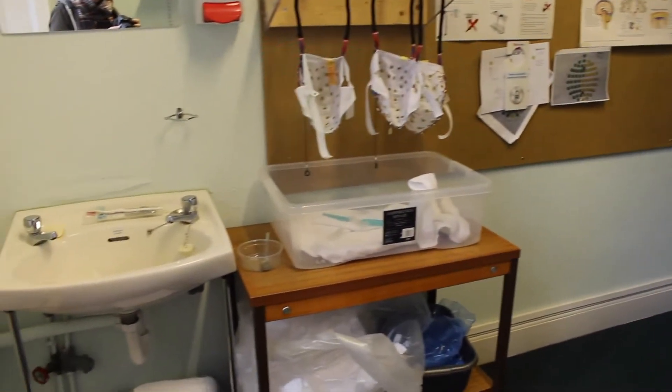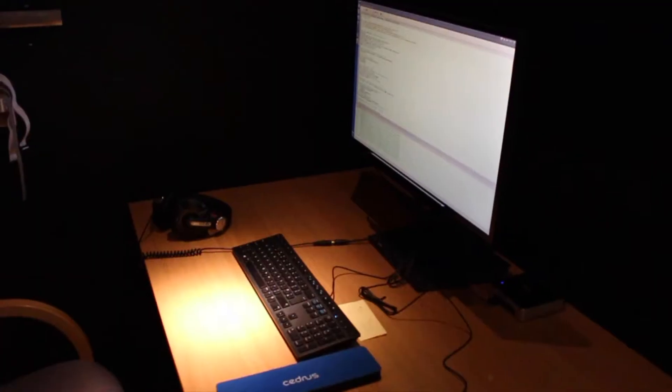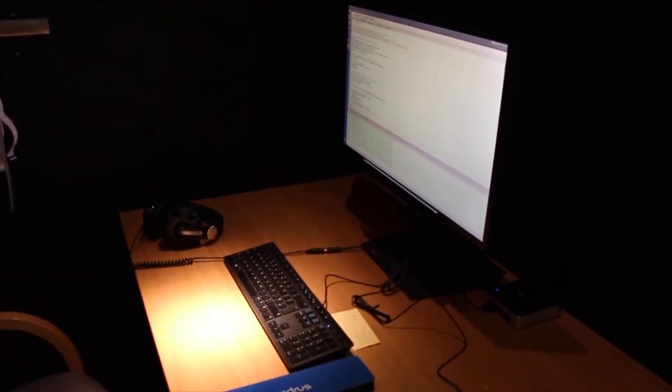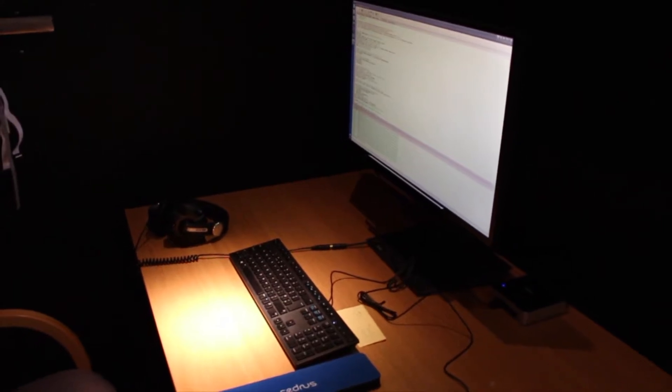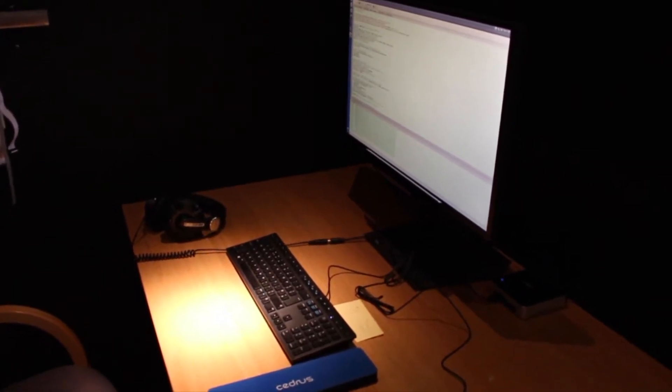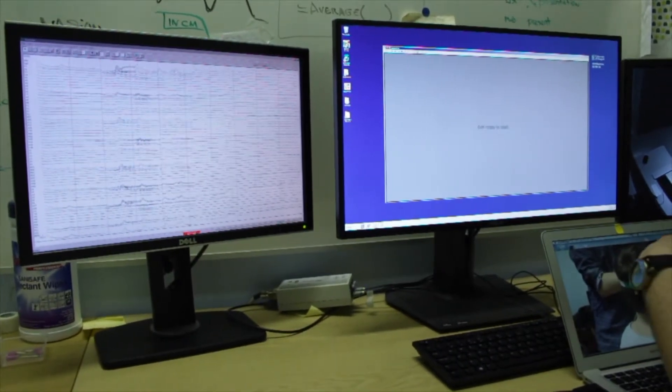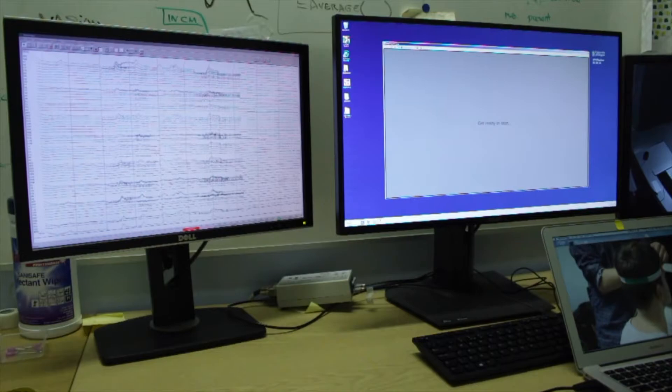There are currently two computers in use. The Stim PC, displayed on the monitor inside the booth, is used for stimulus presentation. As your participant does a task, triggers will be sent from this computer to the EEG PC. This is displayed on the monitors outside the booth and is used to record EEG data using the BrainVision software.